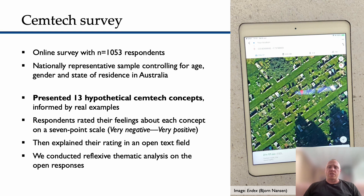A survey of 1053 respondents from the Australian population included a mix of open-ended and multi-choice questions. The survey presented descriptions of 13 hypothetical CEMTECH concepts drawn from the typology and asked respondents to rate their feelings on a seven-point scale ranging from very negative to very positive, following this quantitative survey using a qualitative metric for respondents to explain their ratings in their own words, following the question prompt: why did you give the answer above?